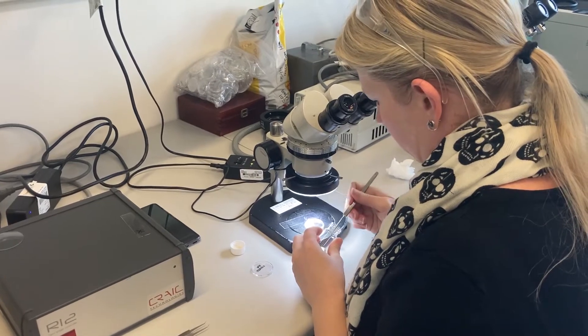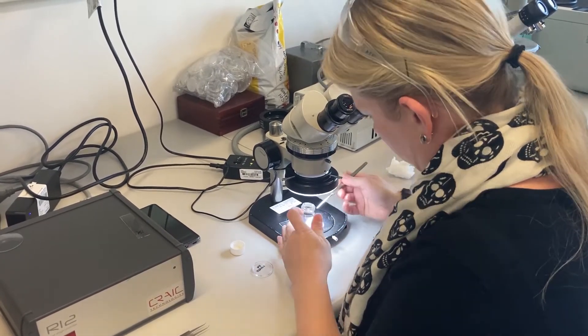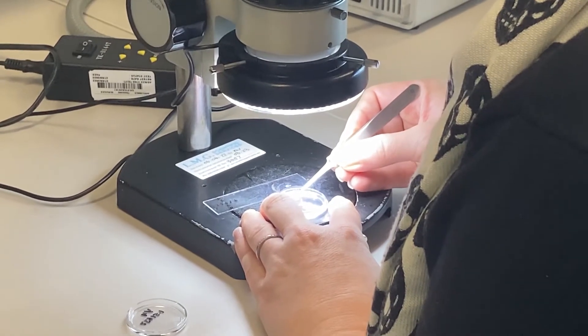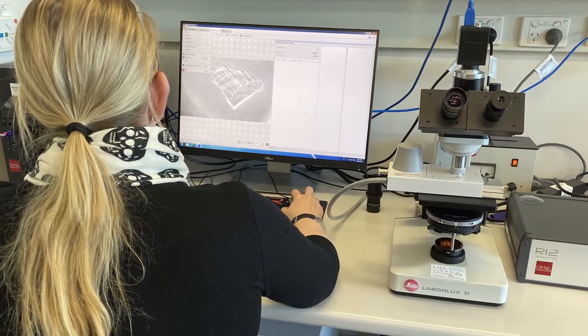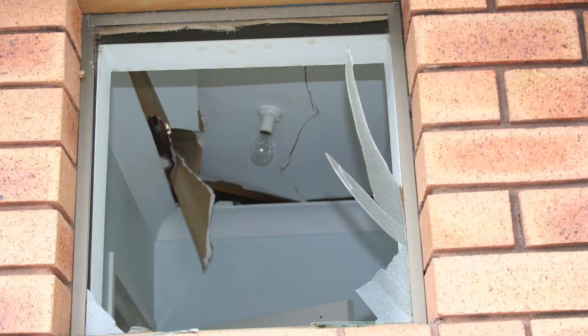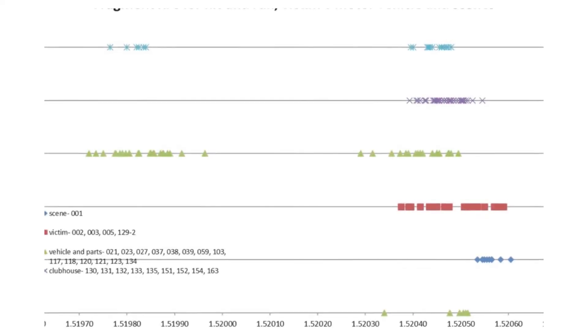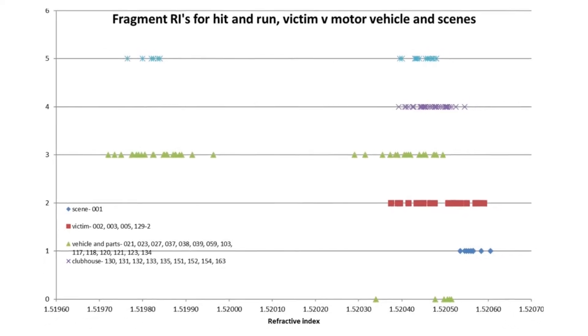When we work on a case, firstly we recover any glass fragments from a suspect or victim's clothing. Then, if we find any, we run a series of tests on those fragments, comparing them to any control glass, like from a broken window or crime scene. We then use some complex statistics to interpret our results and report our findings.